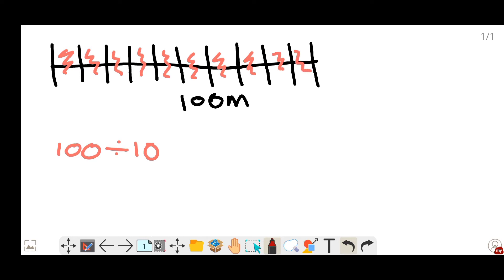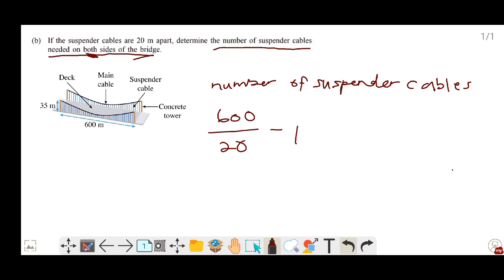But when I wanted to find the number of suspended cables, I should count the lines here. So the line here is 1, 2, 3, 4, 5, 6, 7, 8, 9, 10, 11. There are 11 lines here, but I only want 10. So what I do, I minus 11 with 1, so I will get 10 parts. And this is why you should minus 1 in your calculation.